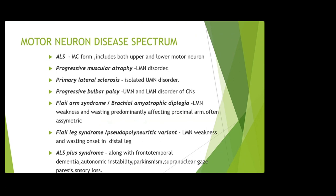What is the spectrum of motor neuron disease? Amyotrophic lateral sclerosis — ALS — is the most common form, including both upper and lower motor neuron involvement. Progressive muscular atrophy is a lower motor neuron disorder. Primary lateral sclerosis is isolated upper motor neuron disease. Flail arm syndrome, also called Brachial Amyotrophic Diplegia, presents with element weakness and wasting predominantly affecting the proximal arm, often asymmetric.